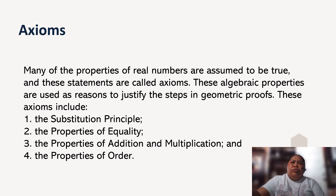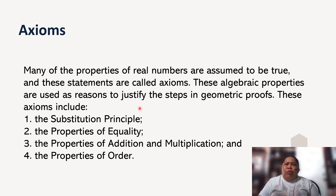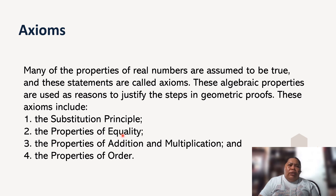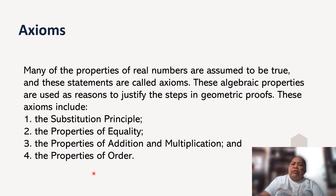We also have axioms. Many of the properties of real numbers are assumed to be true, and these statements are called axioms. These algebraic properties are used as reasons to justify the steps in geometric proofs. These axioms include the substitution principle, the properties of equality, the properties of addition and multiplication, and the properties of order.